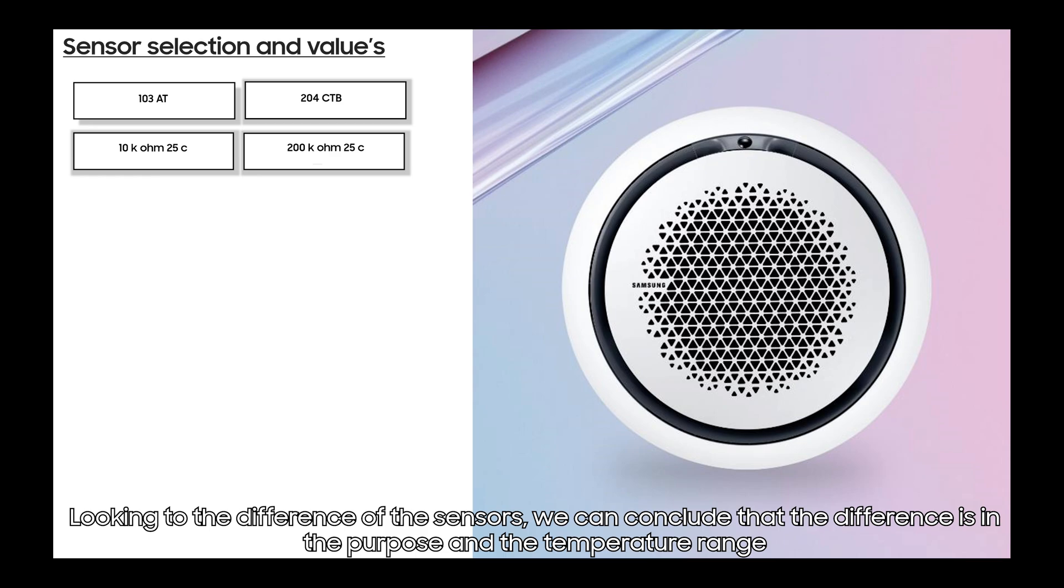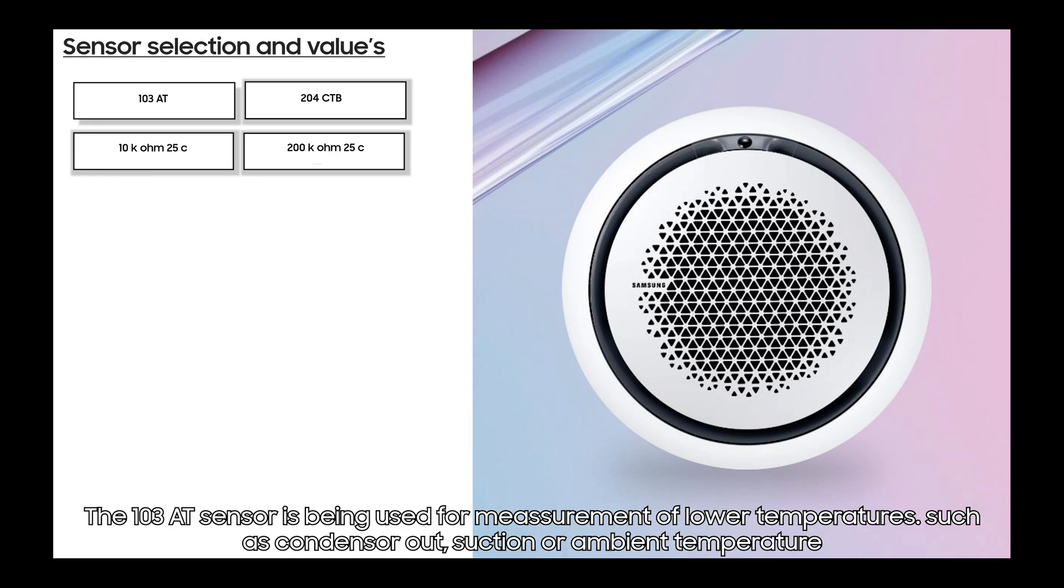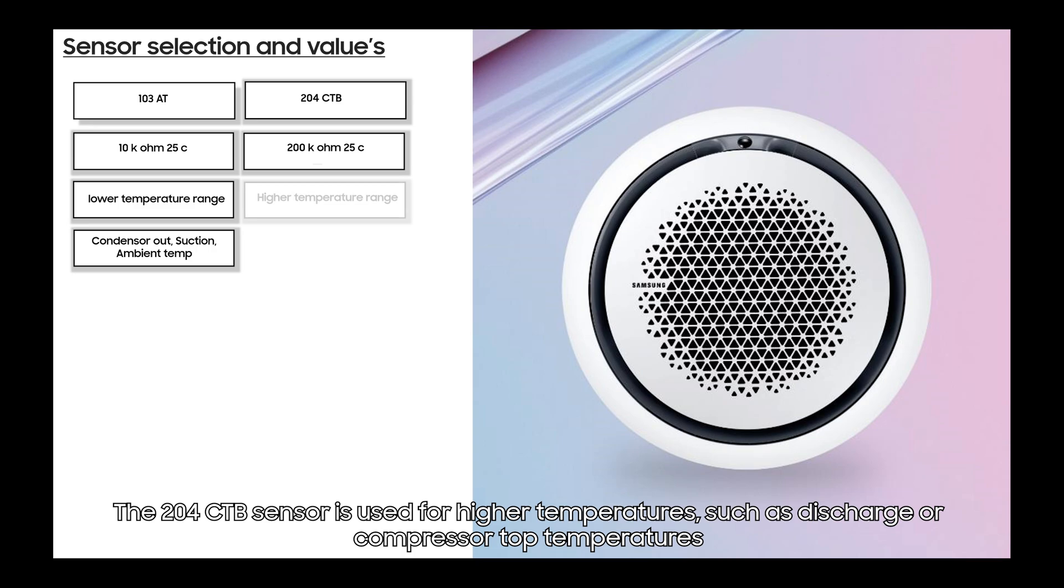The 103 AT sensor is used for measurement of lower temperatures such as condenser out, suction, or ambient temperature. The 204 CTB sensor is used for measurement of higher temperatures such as discharge or compressor top temperatures.